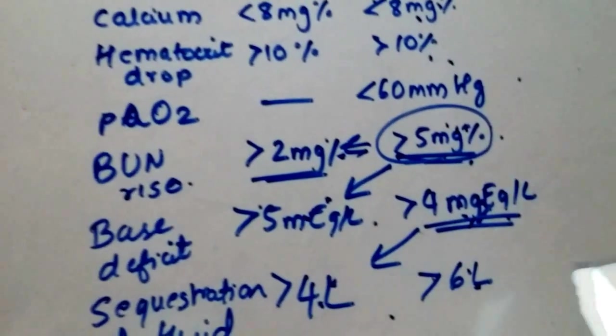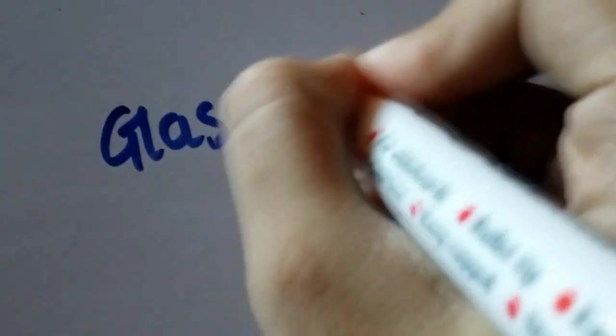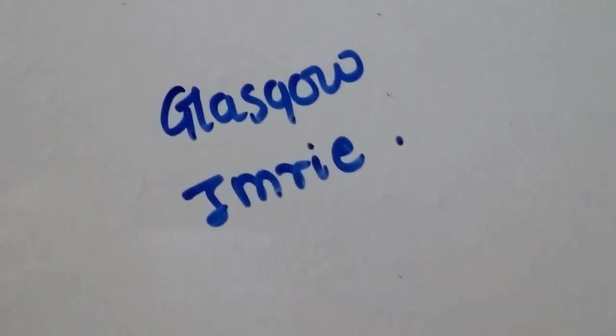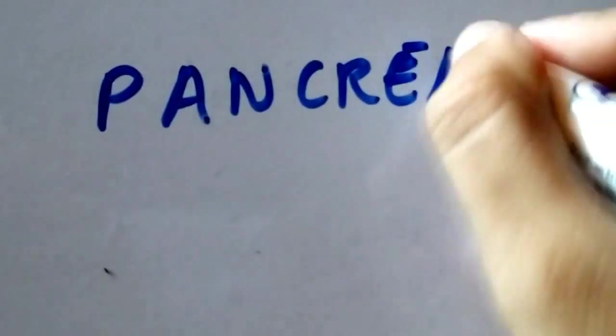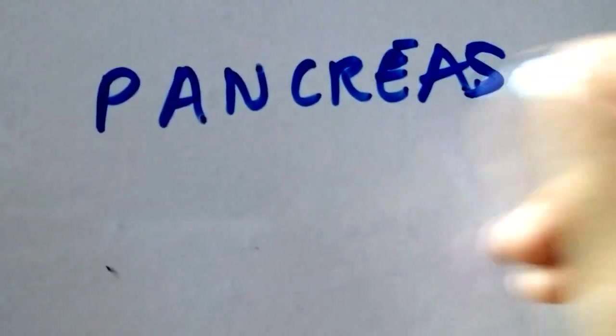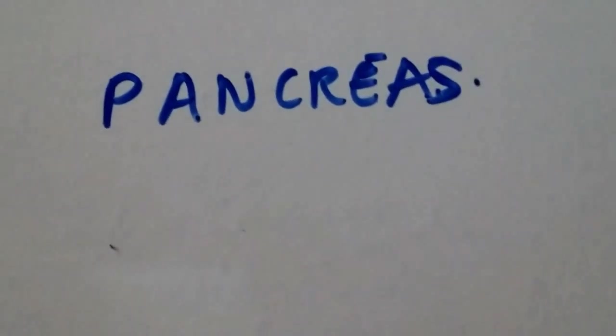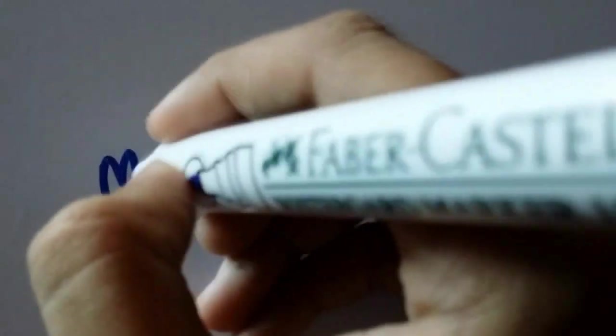So it's complicated but I hope that helps. And that's all. There's also a Glasgow-Imrie criteria for pancreatitis. The mnemonic for that is PANCREAS, but I'll probably make a video on it later.